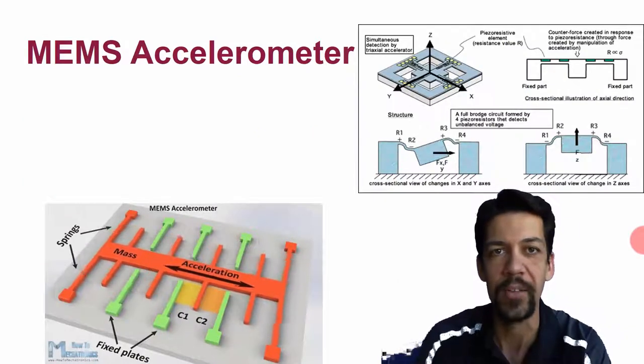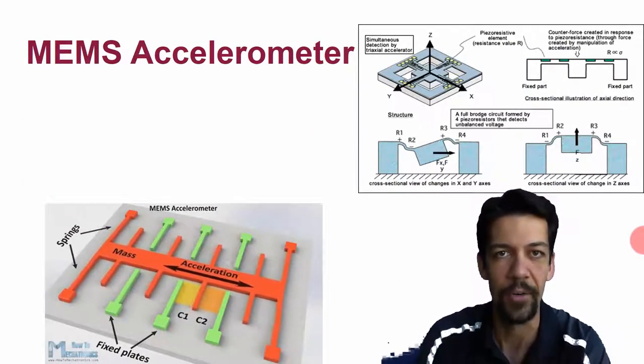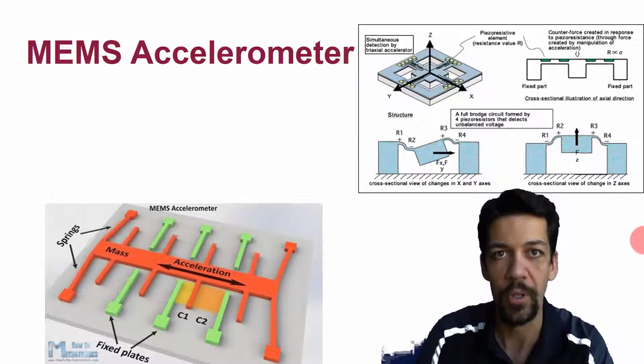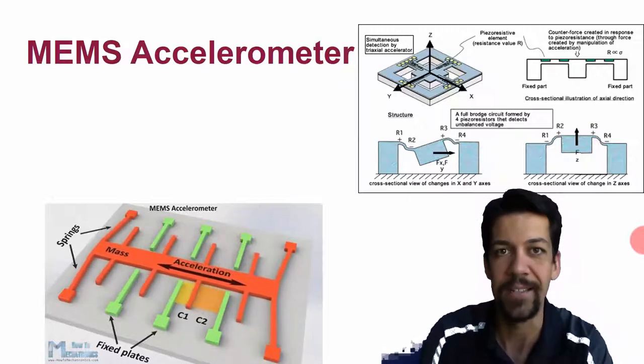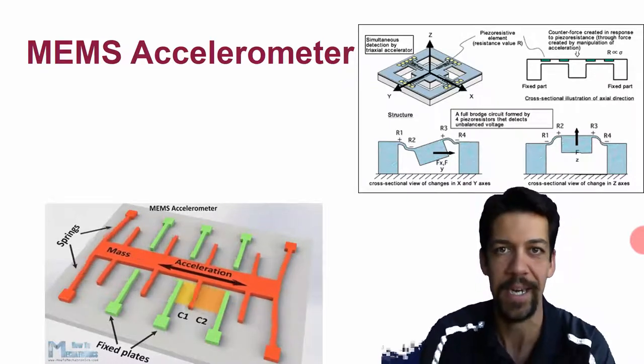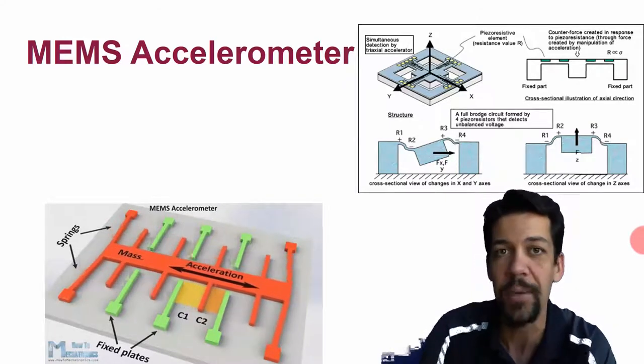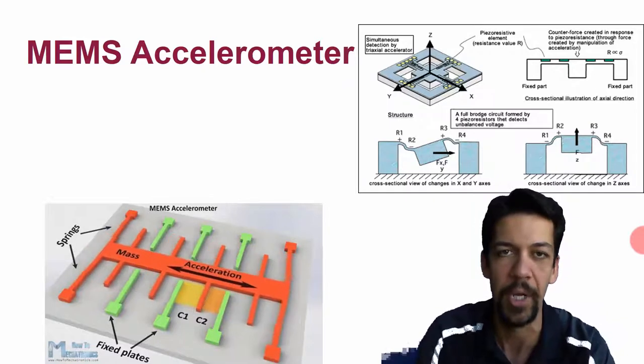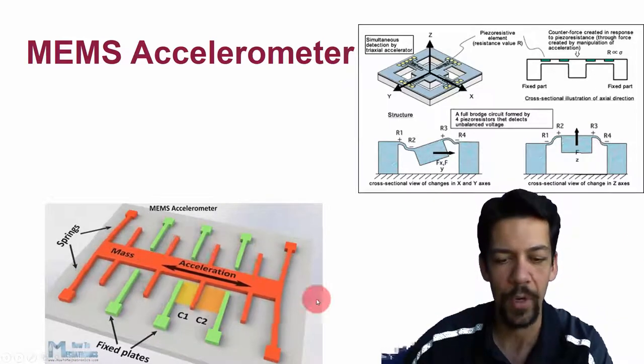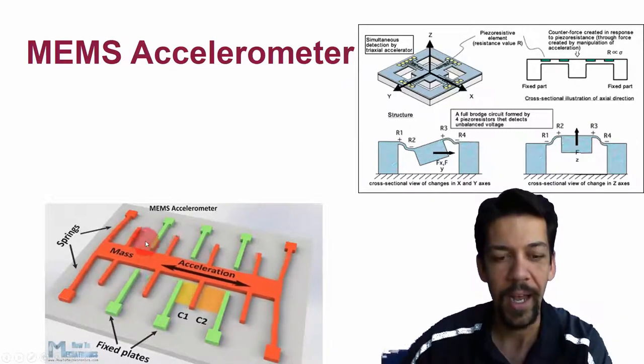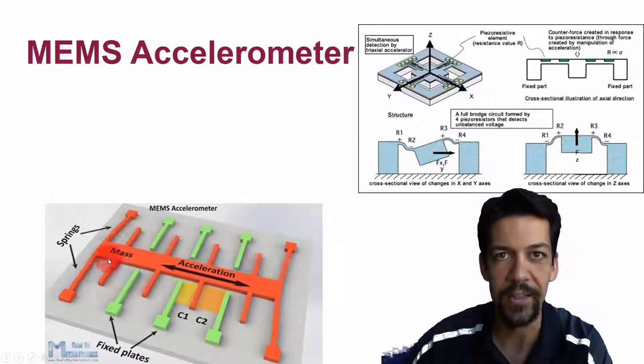The first thing we can do is use a MEMS accelerometer. MEMS stands for microelectronic mechanical system. It's basically a tiny mechanical system etched onto the surface of a silicon wafer, a chip that has a mechanism on it. The accelerometers work by having a mass etched onto the chip that has a couple of springs etched onto it.